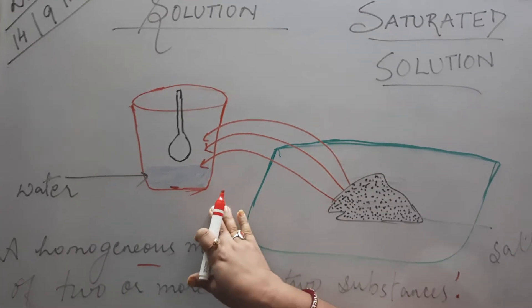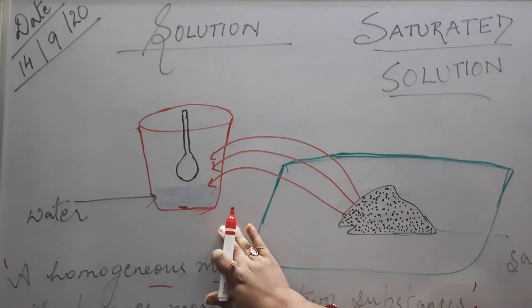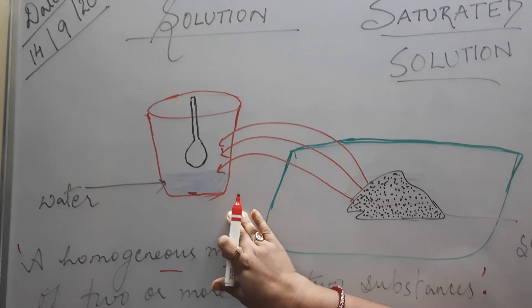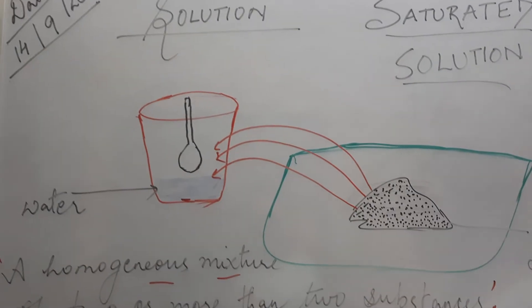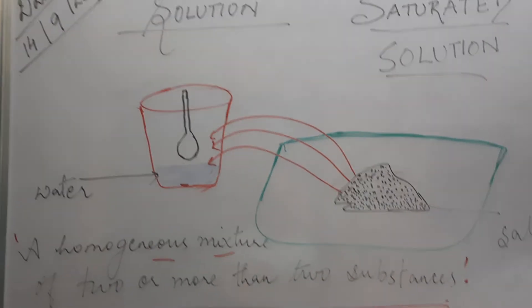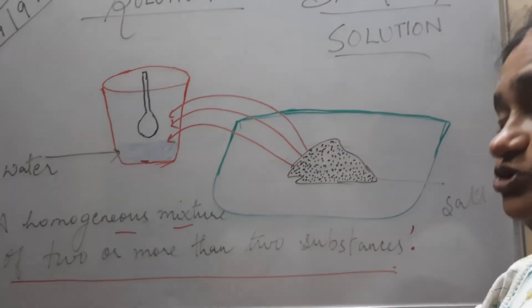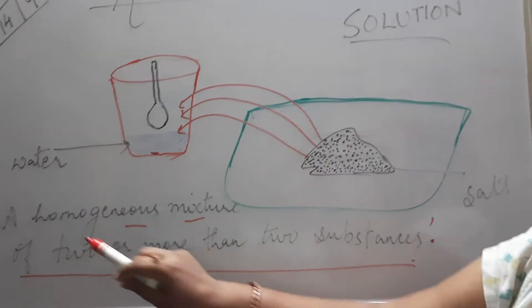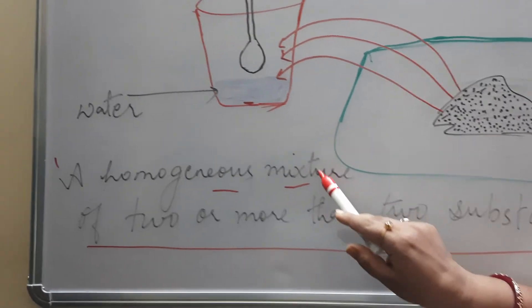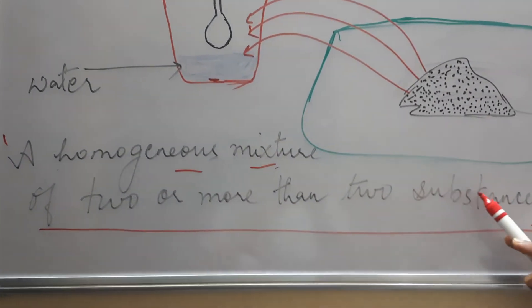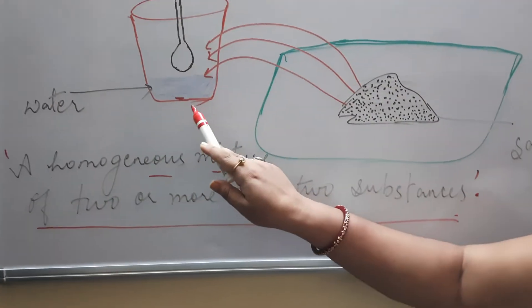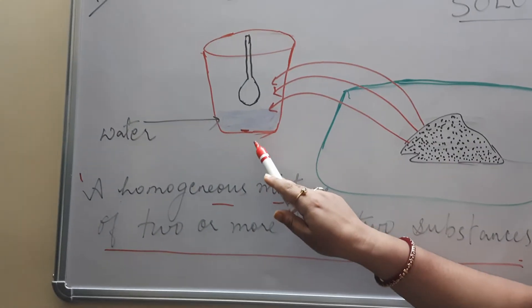So this particular mixture, the term which I use over here, is known as solution. So children, finally what do we conclude for solution? It is a homogeneous mixture of two or more than two substances. So here our two substances are water and salt.